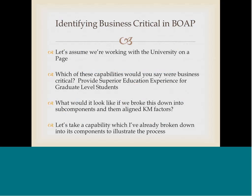So that was a university on a page. Let's assume we're working in that context. Which of these capabilities would you say were business critical? I would say there are two for our university: one is to ensure that we have a high quality undergraduate education experience, and the second would be to provide a superior education experience for graduate level students. Let's take the undergraduate education experience and walk through the process of an audit for that capability — what it would look like if we broke this down into subcomponents and looked for intellectual capital assets that supported that capability.